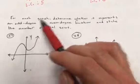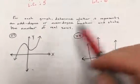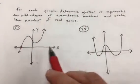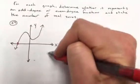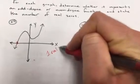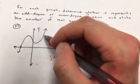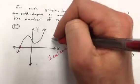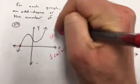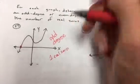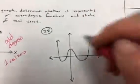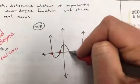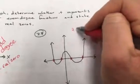For each graph, determine whether it represents an odd or even degree function and state the number of real zeros. The first one only crosses the x-axis one time, so it has one real zero. Notice the end behavior: going up and going down — opposite directions — that equals odd degree. So this is odd degree with one real zero.